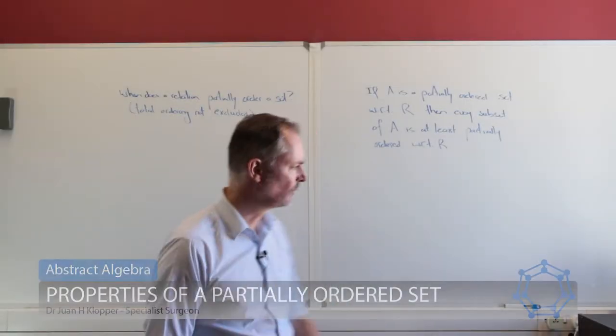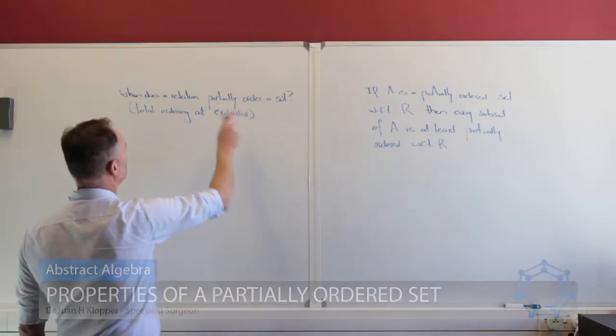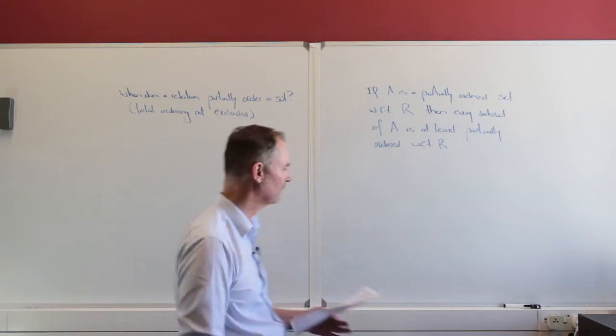So we continue our discussion on this ordering of sets and I've got a question for you in a statement. The first question is, when does a relation partially order a set and then total ordering is not included?